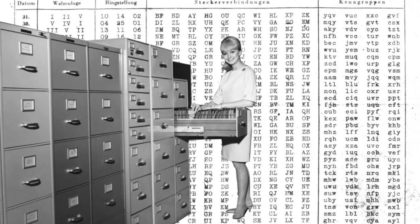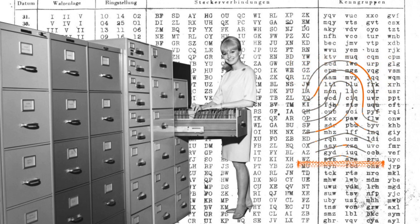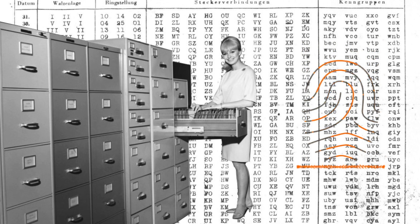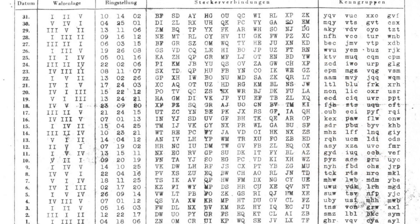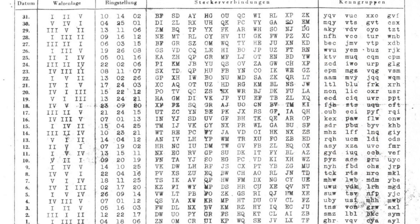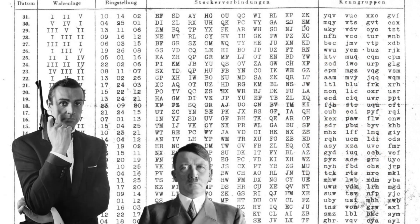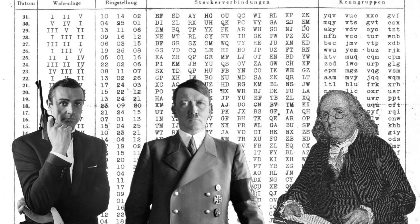Let's first understand what cryptography is. Cryptography is the art of writing or storing information in a form that can only be understood by a select few people who are privy to it. Traditionally, it was used by spies, military leaders and diplomats to protect information.